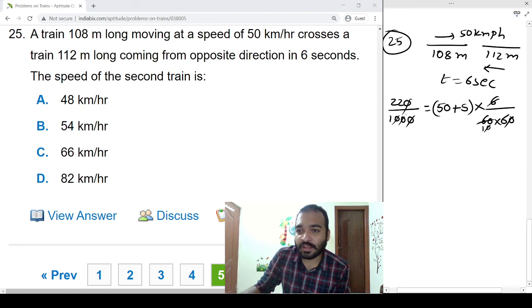22, 6, 120 plus 12, 132. 132 is equal to 50 plus s, so s is equal to 82 kmph.